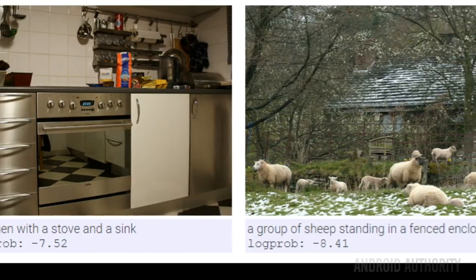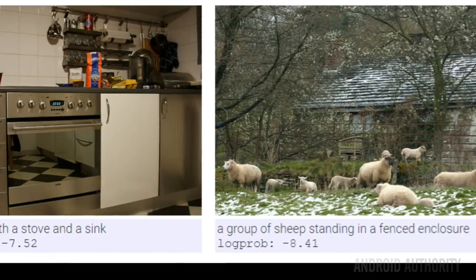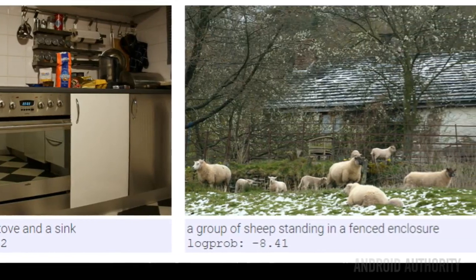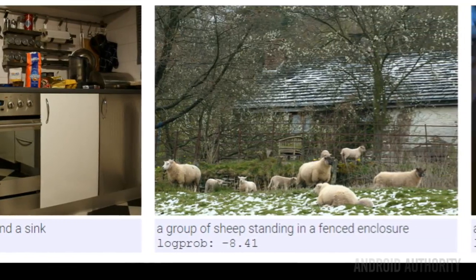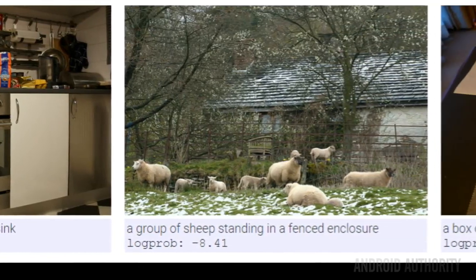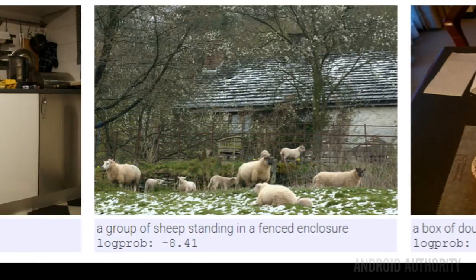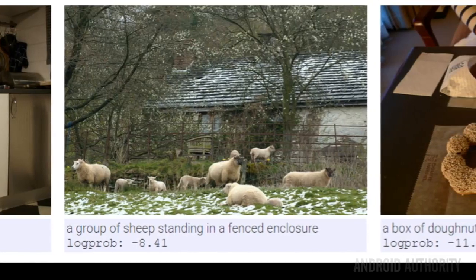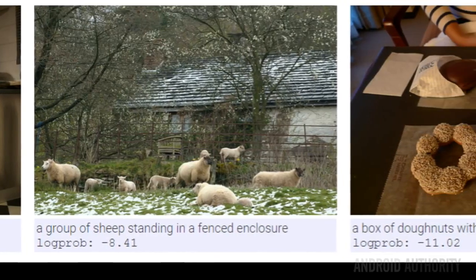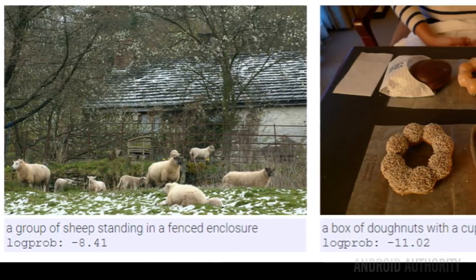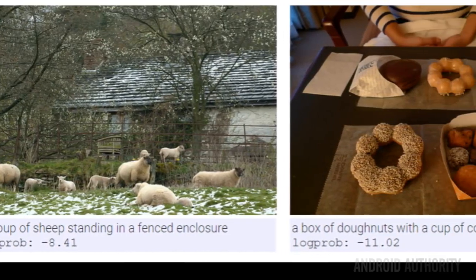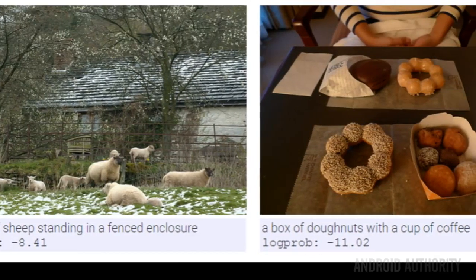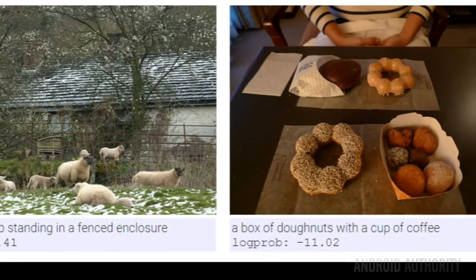The first two are quite accurate, although I'm not sure there's a sink in that first picture. The third is interesting in that the computer managed to detect the box of donuts, but it misinterpreted the other pastries as a cup of coffee.